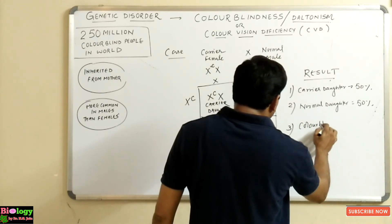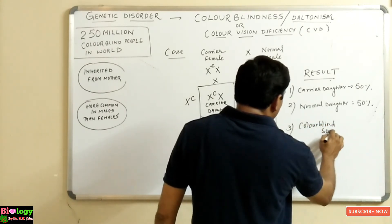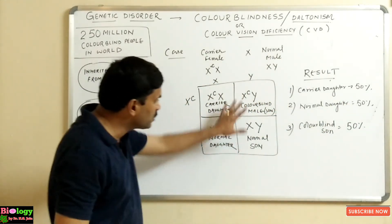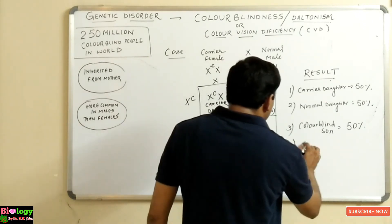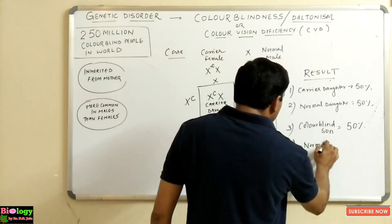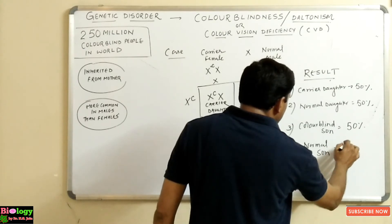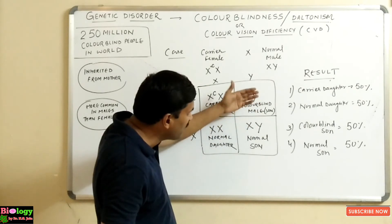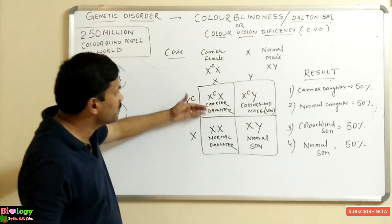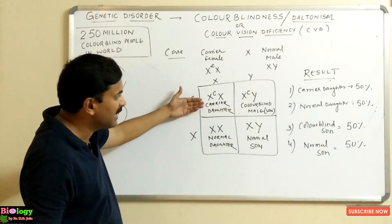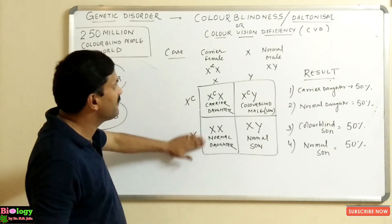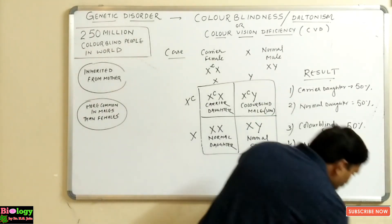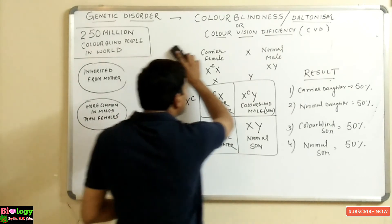So when a carrier female is crossed with a normal male: out of all sons, 50% are colorblind and 50% are normal. Out of all daughters, 50% are carriers and 50% are normal.